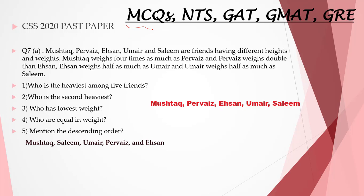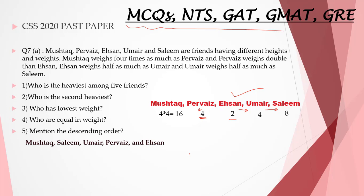If you encounter this question in an MCQ-based exam, just directly assume a value for one person and calculate the other values. For example, assuming a value of 4 for Parvez: Parvez weighs double Ehsan, so Ehsan is 2. Ehsan is half of Umair, so Umair is 4. Umair is half of Salim, so Salim is 8. Mushtaq is 4 times Parvez: 4 into 4 equals 16. In MCQ-based exams where time is crucial, just reach the answer as soon as possible. With a little practice you can do it like this, but if you feel uncomfortable, stick to the previous method.